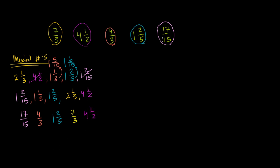The other way to do it is to convert all numbers into improper fractions. 7/3 stays as 7/3. For 4 and 1/2: 4 is the same as 8 halves, so 8/2 plus 1/2 is 9/2 — or simply 2 times 4 is 8, plus 1 is 9, giving 9/2. 4/3 is already an improper fraction. For 1 and 2/5: 1 equals 5/5, and 5/5 plus 2/5 is 7/5. Finally, 17/15 stays as 17/15.